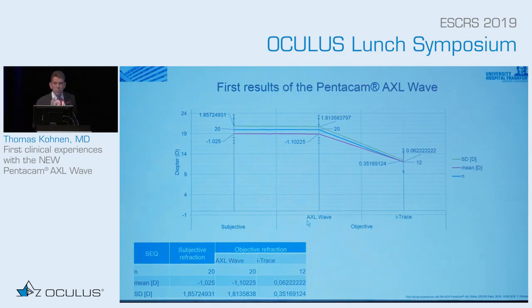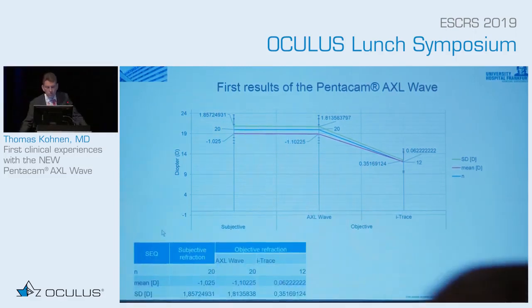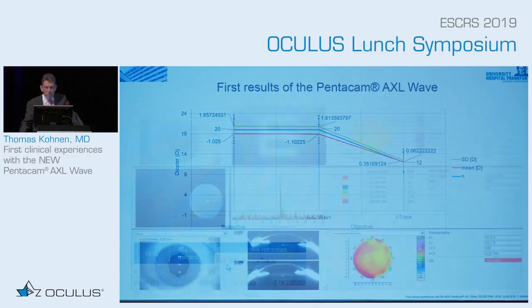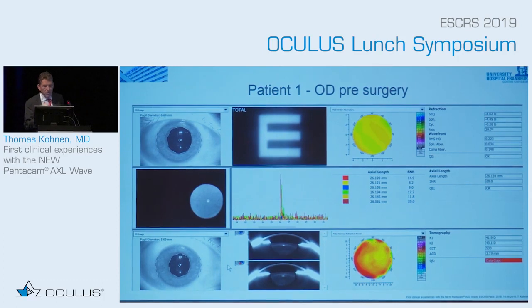We did a first series of 20 eyes, and what we found is that we compared our subjective and objective refraction with the AXL Wave. We found similar results. We also did some eye-tracking measurements and found some differences in these first 20 eyes. This is just preliminary — we've only had the device for three weeks — so we need to continue. Let me finish my talk in the next three minutes.